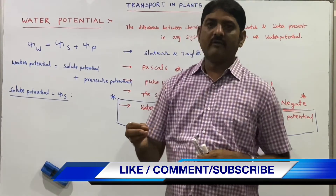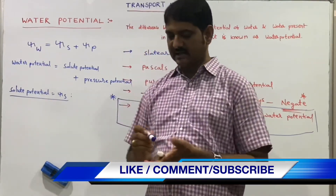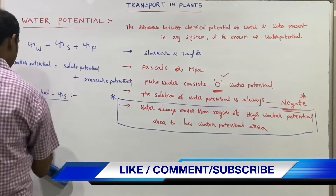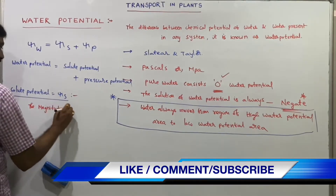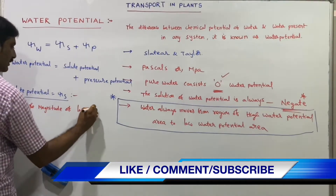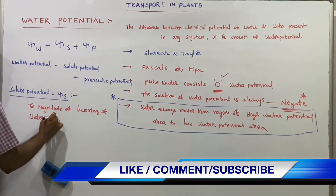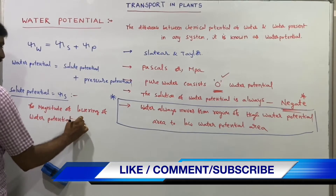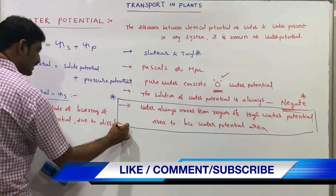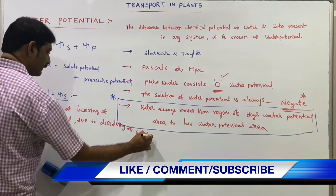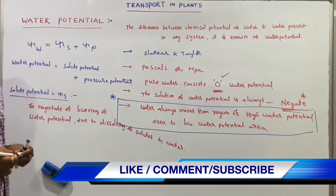The magnitude of lowering of water potential due to dissolving of solutes in water is known as solute potential. It is always negative. Pure water has zero solute potential.